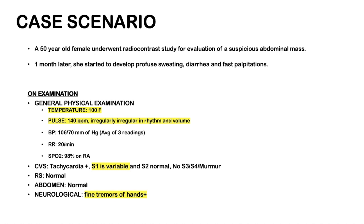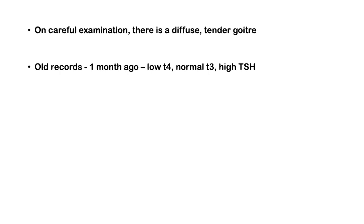Saturation is 98% on room air. Cardiovascular examination reveals tachycardia; S1 is variable — very typical of atrial fibrillation; S2 is normal; no S3, S4, or murmur. Respiratory system is normal. Abdomen is normal. Neurological examination reveals fine tremors of the hands. On careful examination, there is a diffuse tender goiter, suggestive of inflammation within the thyroid gland leading to thyroiditis. Her old records reveal that one month ago she had a low T4, normal T3, and elevated TSH — very clearly suggestive of primary hypothyroidism.